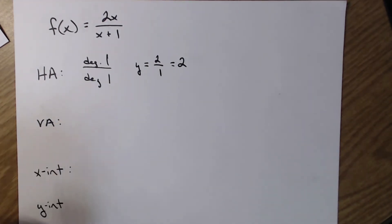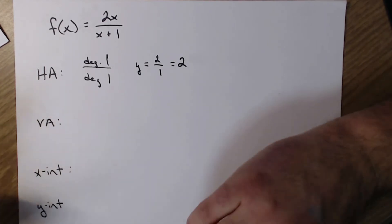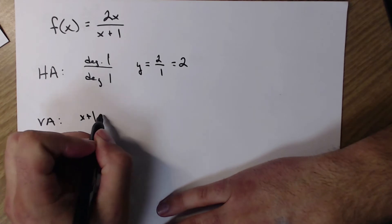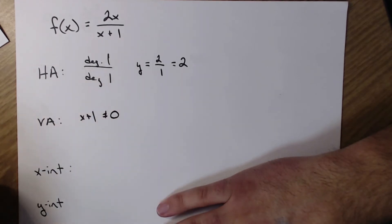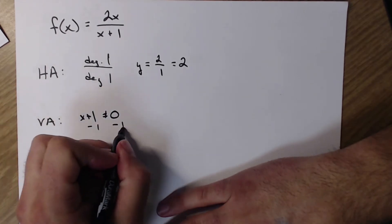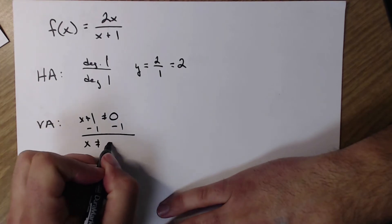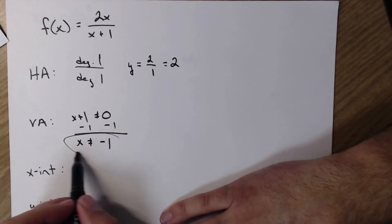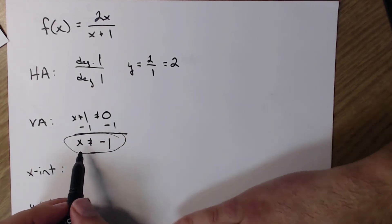Now for the vertical, that one is I think a little bit easier. I'm going to look at my denominator and say that it's not allowed to equal 0. So I subtract my 1. x cannot be negative 1. So that means that the vertical asymptote is at x equals negative 1.